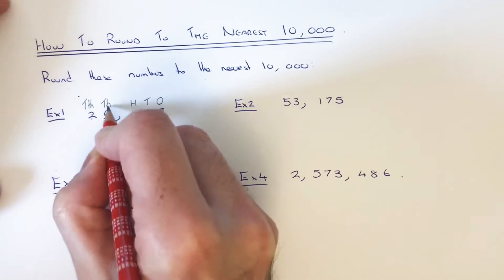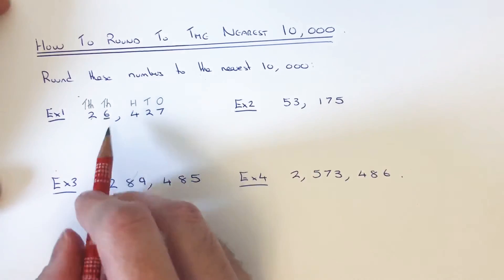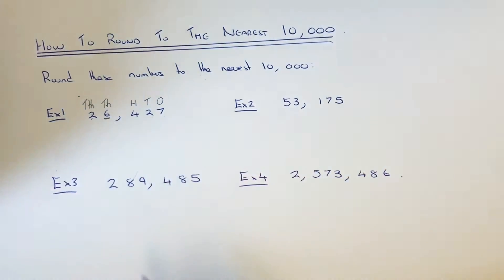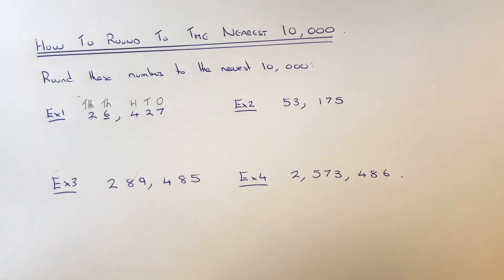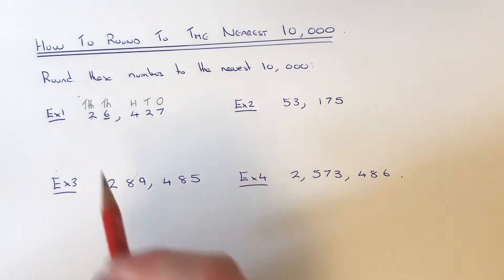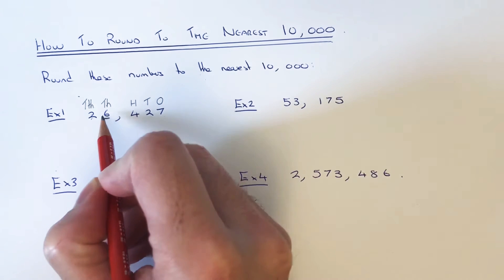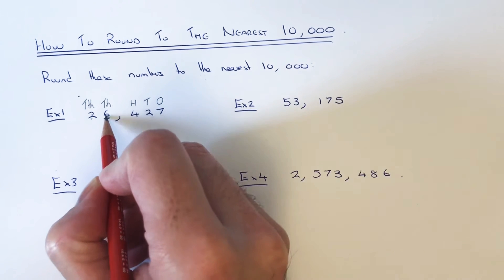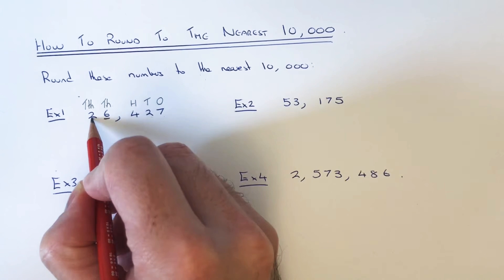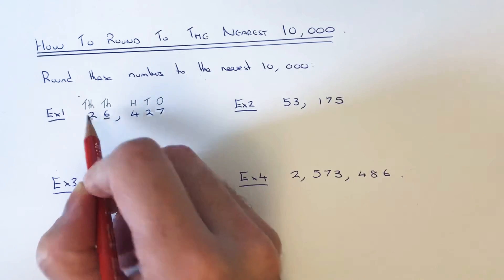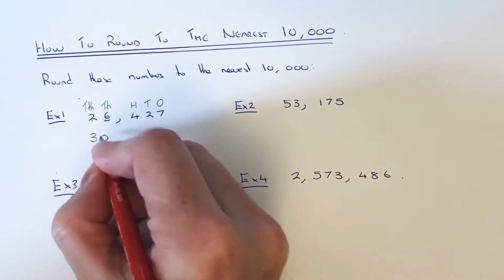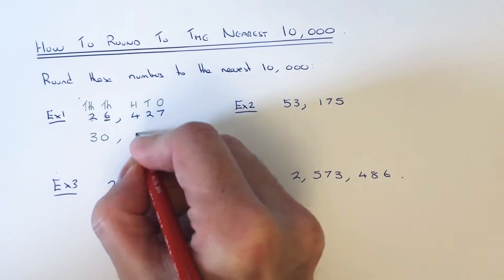The number in the thousands column is six. You probably know the rules already: if that number is five or above you round up; if it's less than five you round it down. Since this number is a six, that means we need to round it up to thirty thousand, so that would be our answer.